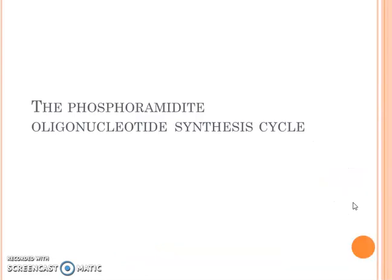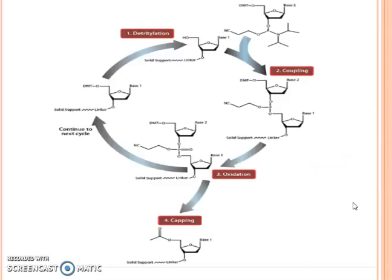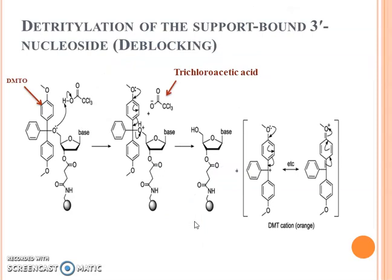The phosphoramidite monomers go through the oligonucleotide synthesis cycle, which starts from detritylation, then coupling, oxidation, and capping. The first step is detritylation of the support-bound 3' nucleotide — also called deblocking — in which the DMT group is removed by the addition of trichloroacetic acid. You can see that the solid support is attached to a linker, and the linker is attached to the base with a free OH group.